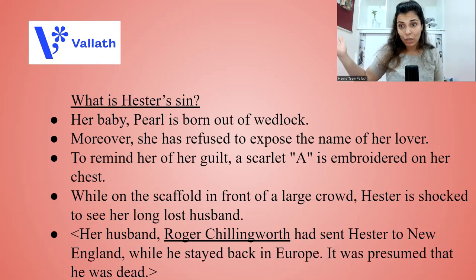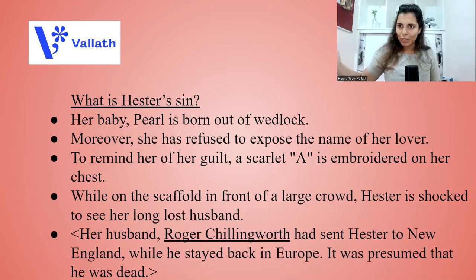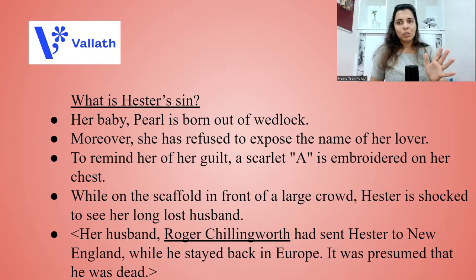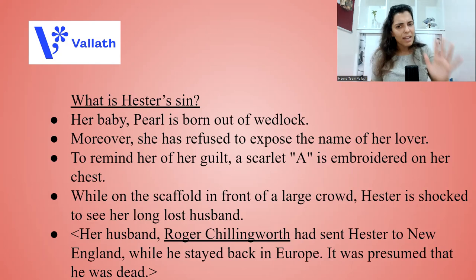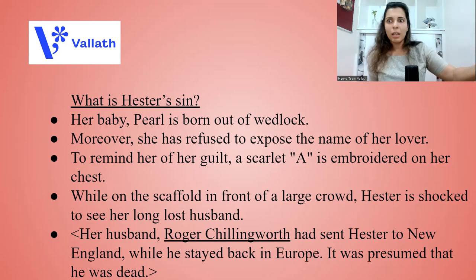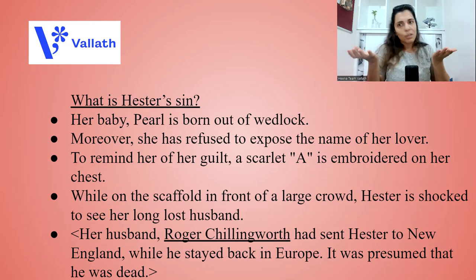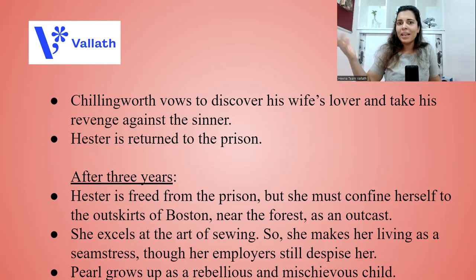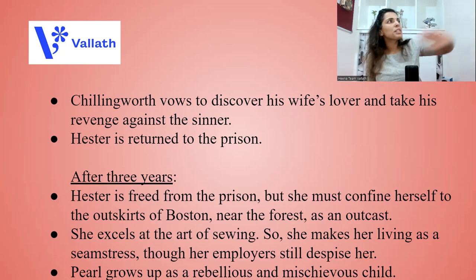While on the scaffold in front of a large crowd, Hester is shocked to see someone — her long-lost husband, Roger Chillingworth. He had sent Hester to New England a few years back while he stayed in Europe, promising to come later, and it was presumed he had died. Behind all this, she had an affair and gave birth to Pearl. When Chillingworth sees this, he vows to discover his wife's lover and take revenge against the sinner. After this, Hester is returned to prison.